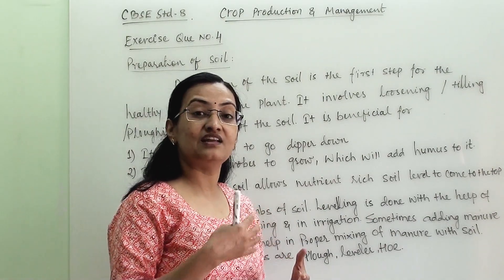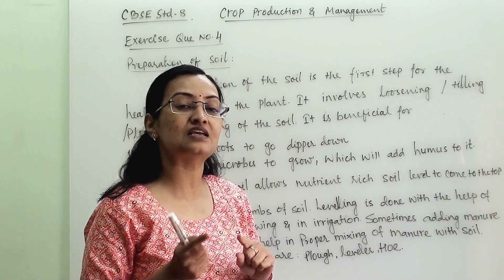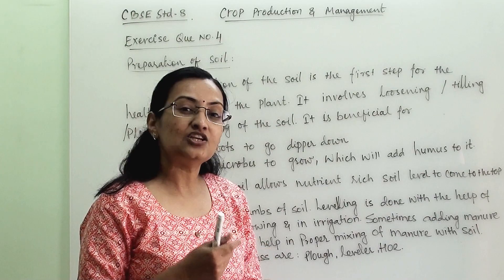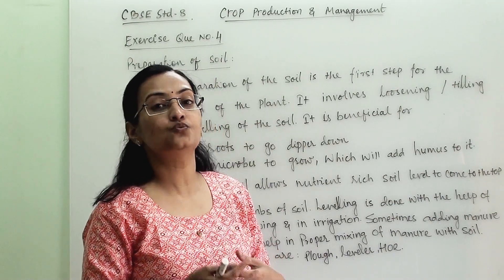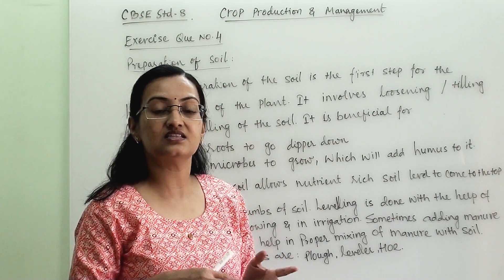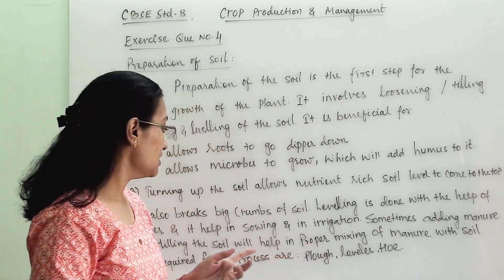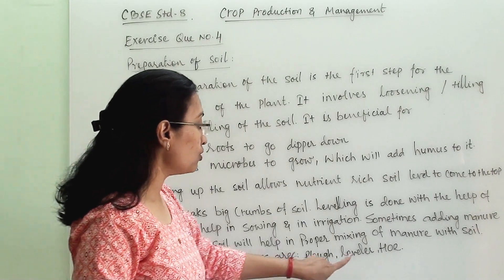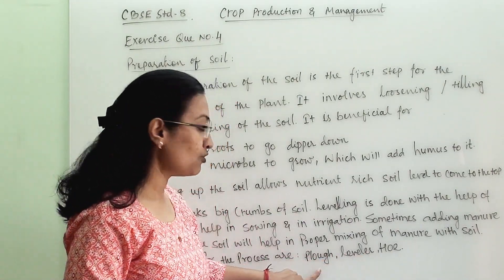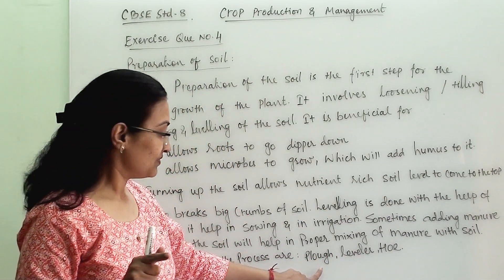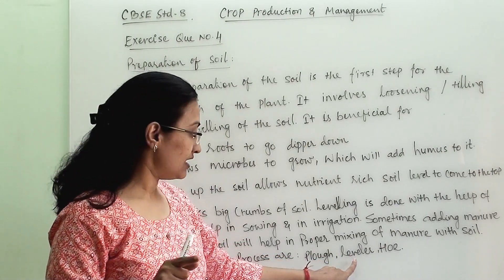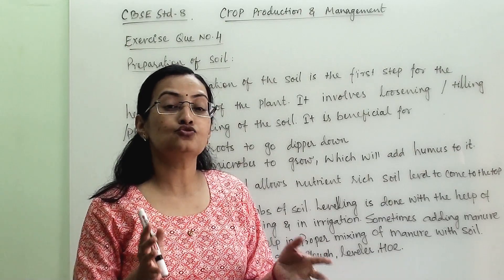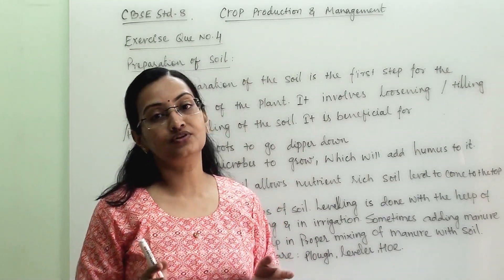Sometimes when we are leveling and tilling the soil, we mix manure with it. The benefit is that the manure gets completely mixed with the soil, which is again helpful for the healthy growth of plants. The tools required for the process are a plow — used for plowing — a leveler — used to level the soil — and a hoe — used for removing weeds and breaking big crumbs of soil.